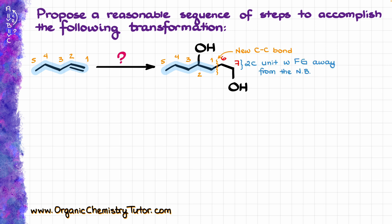Another thing that I am noticing about this molecular moiety over here is that I have a 2-carbon chunk with a functional group — an alcohol in this case — sitting on the second carbon, or 2 carbons away from the connection point. Typically, that is going to be a hallmark of an epoxide opening, which means that our potential predecessors in this case could look like something like this.